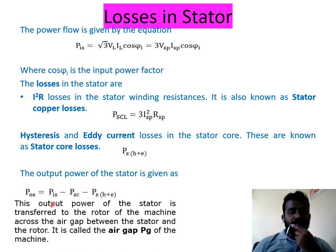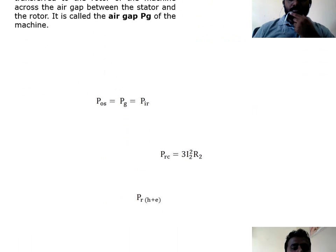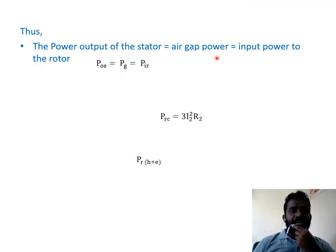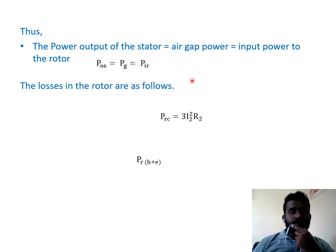This output power of the stator is transferred to the rotor of the machine across the air gap between the stator and rotor. It is called the air gap power PG of the machine. Thus, the power output of the stator equals the air gap power, which equals the input to the rotor. POS equals PI minus stator copper loss minus hysteresis and eddy current losses, as we have seen.